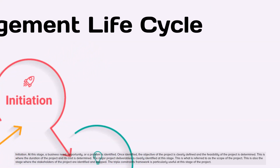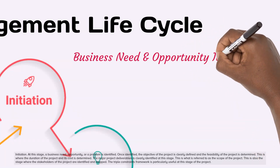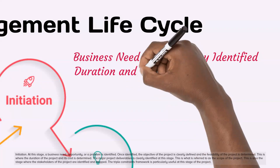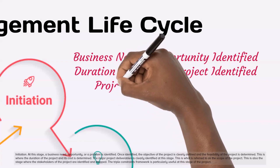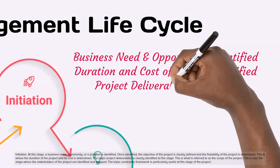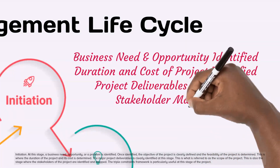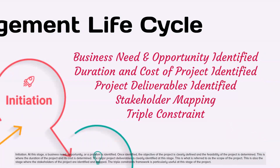Initiation. At this stage, a business need, opportunity, or a problem is identified. Once identified, the objective of the project is clearly defined and the feasibility of the project is determined. This is where the duration of the project and its cost is determined. The major project deliverables are clearly identified at this stage — this is what is referred to as the scope of the project. This is also the stage where the stakeholders of the project are identified and mapped. The triple constraints framework is particularly useful at this stage.